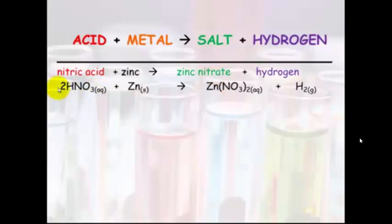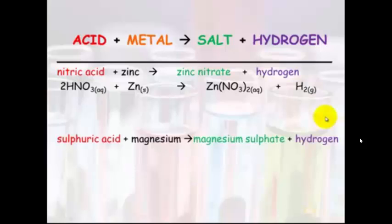We'll look at the formula here. HNO₃ plus Zn. So the Zn hooks up with the NO₃ to make zinc nitrate, and the two hydrogens get left to make hydrogen gas.